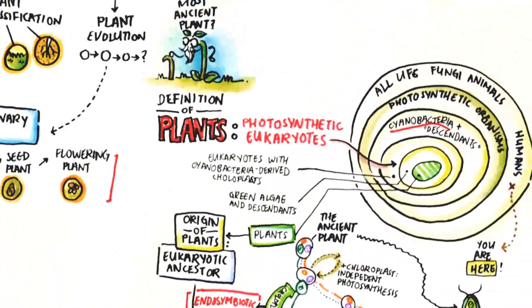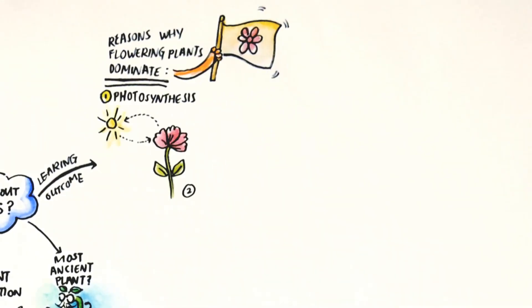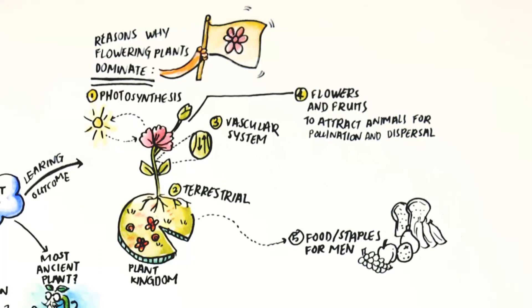Today, most of our food are derived from flowering plants, like cereals, fruits and vegetables.